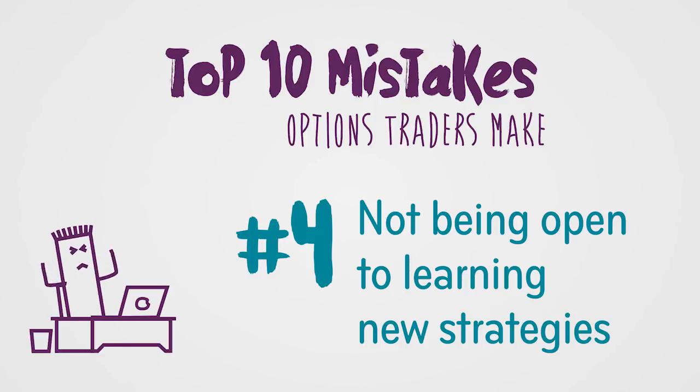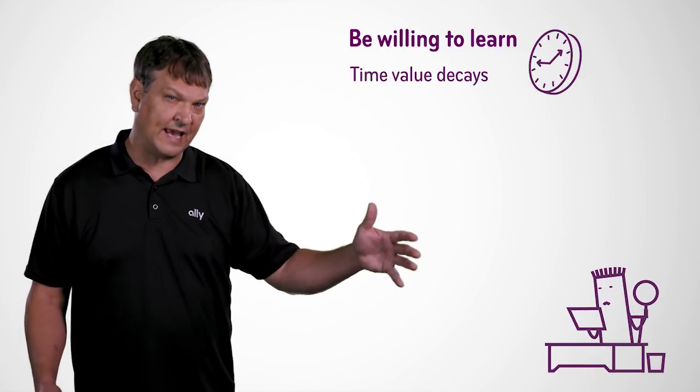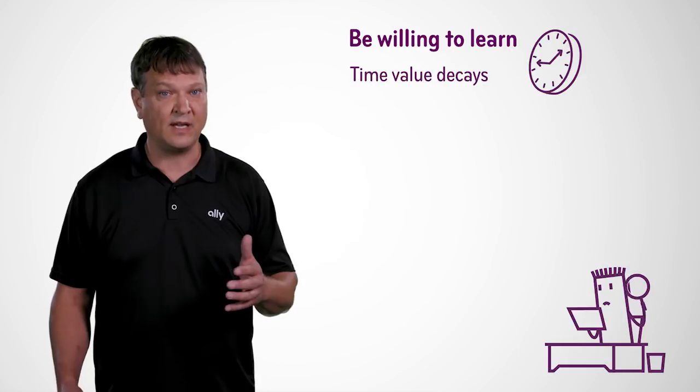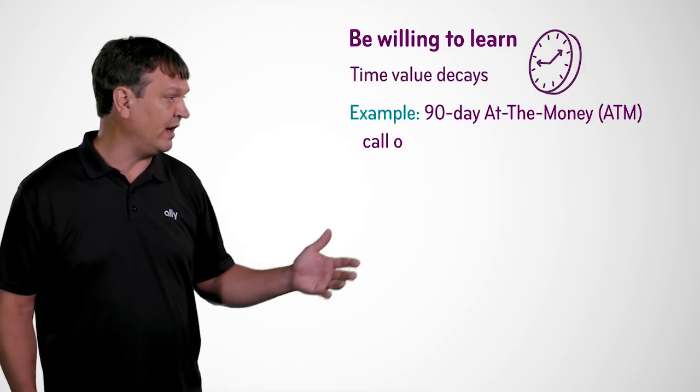The next common mistake that beginning option traders make is not being open to more advanced option strategies. The biggest thing about option contracts is that they have a time component embedded in them. Specifically, if you're looking at buying at-the-money option contracts where the stock is at 60 and the strike is 60, there is a lot of time premium in that contract. Let's talk about how options decay as they approach expiration and how that time premium component accelerates as expiration approaches.